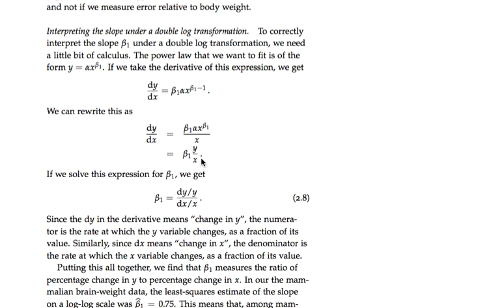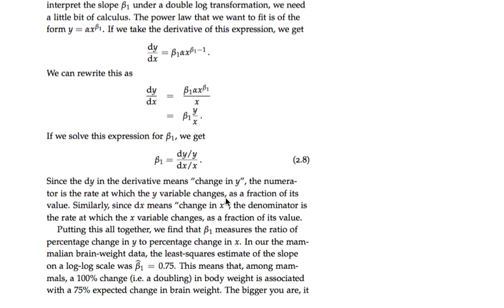And so we get dy dx equals beta one times y over x. And if we just solve that expression for beta one, this is what we get. We get in the numerator dy over y, and in the denominator dx over x. And let's remember what dy and dx are. They are change. So in the numerator here, we have change in y divided by y, and in the denominator, we have change in x divided by x. So instead of absolute change dy over dx, this is telling us that beta one in a power law model is relative change, relative change in y divided by relative change in x.